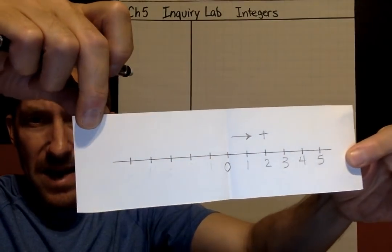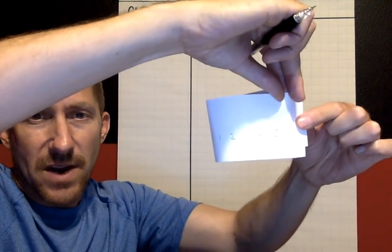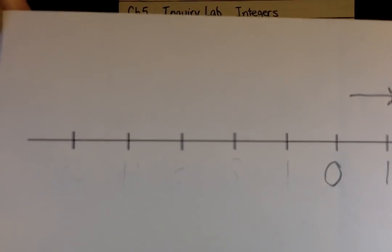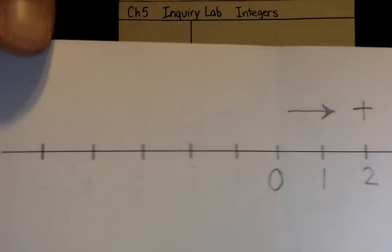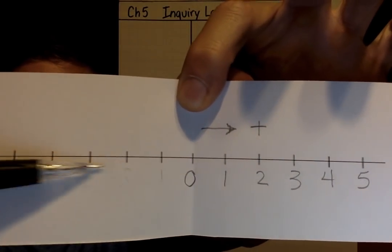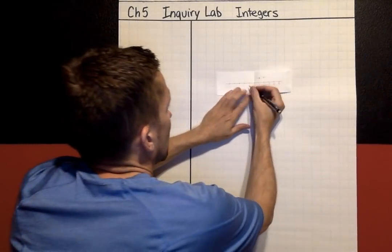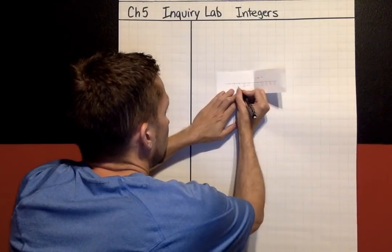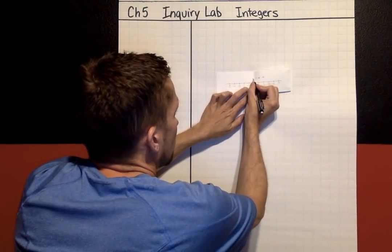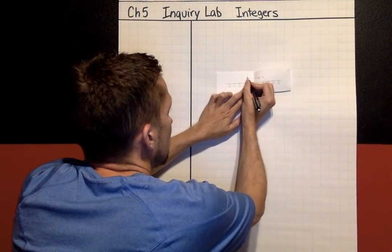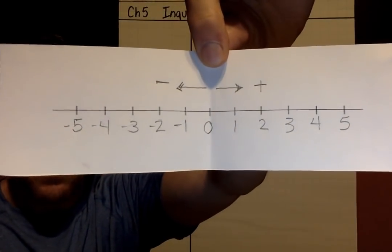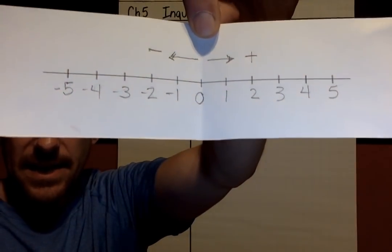Open your number line back up. I traced those numbers right through the page. Now when I open it up, you can see numbers on the back that are backwards, but I can tell that's a one, a two, a three. These numbers in this direction are negative, so I'm going to label those negative numbers. I'm also going to draw an arrow moving to the left from zero. So now your number line has positive numbers going to the right and negative numbers moving to the left.